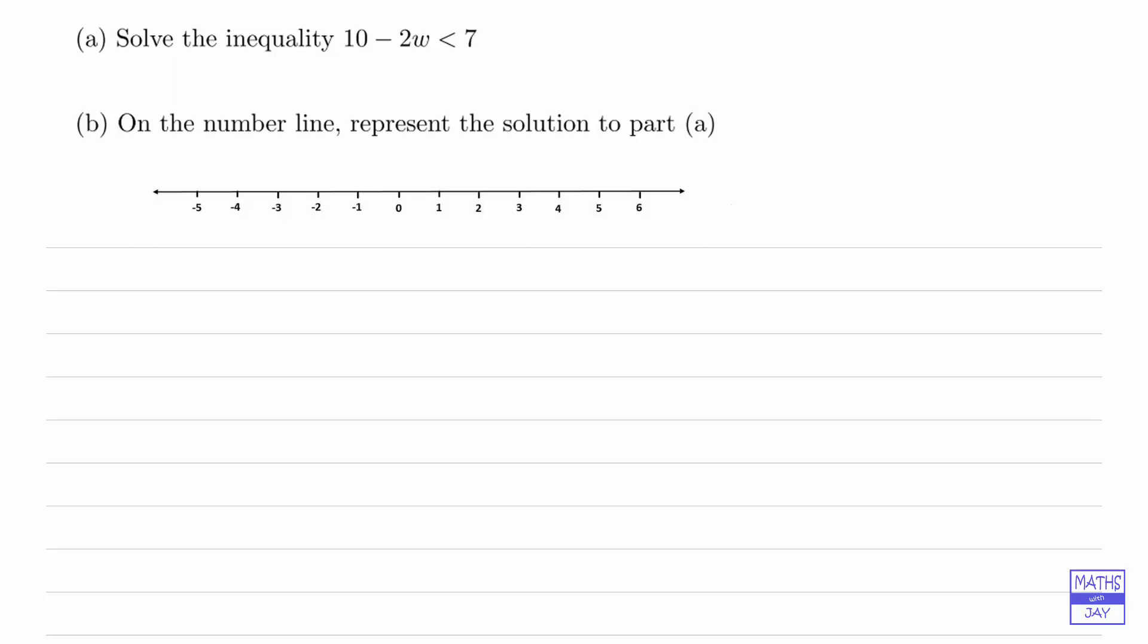So, method number one for part A. What I'm going to do here is add 2w to both sides. I think the easiest way to solve an inequality like this. So if we do that, then on the left-hand side we just have 10. So then we have 10 is less than 2w plus 7. So if 10 minus 2w is less than 7, then 10 must be less than 2w plus 7.